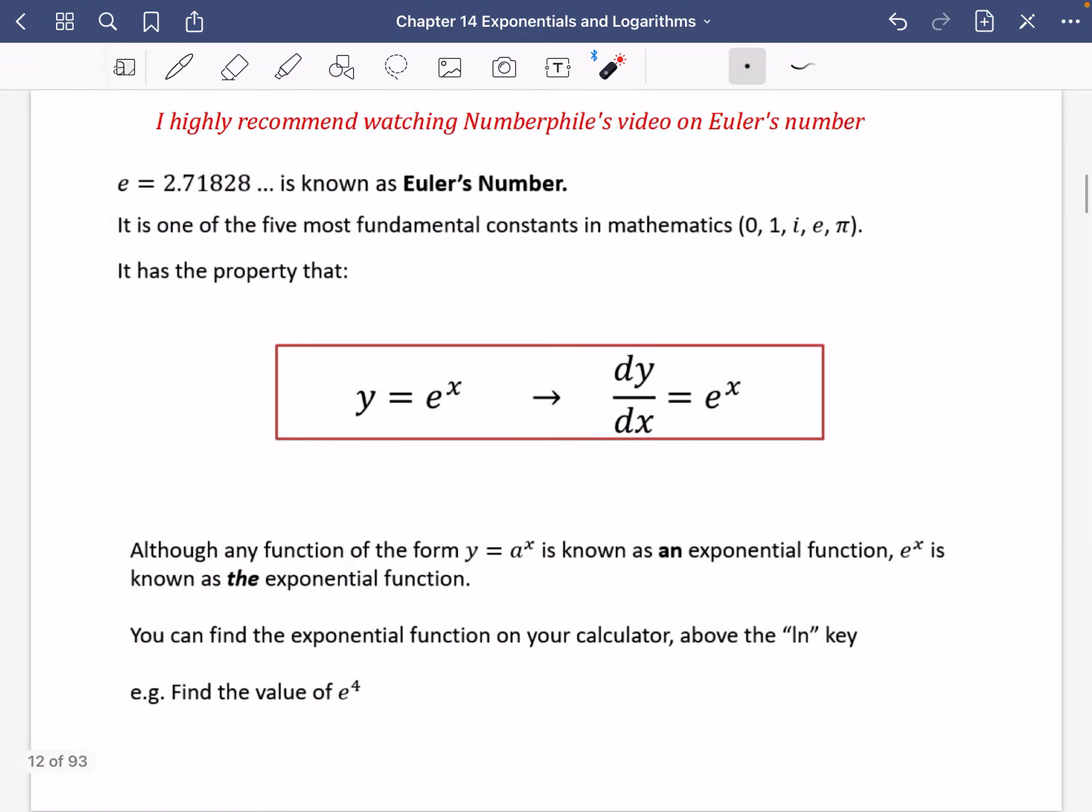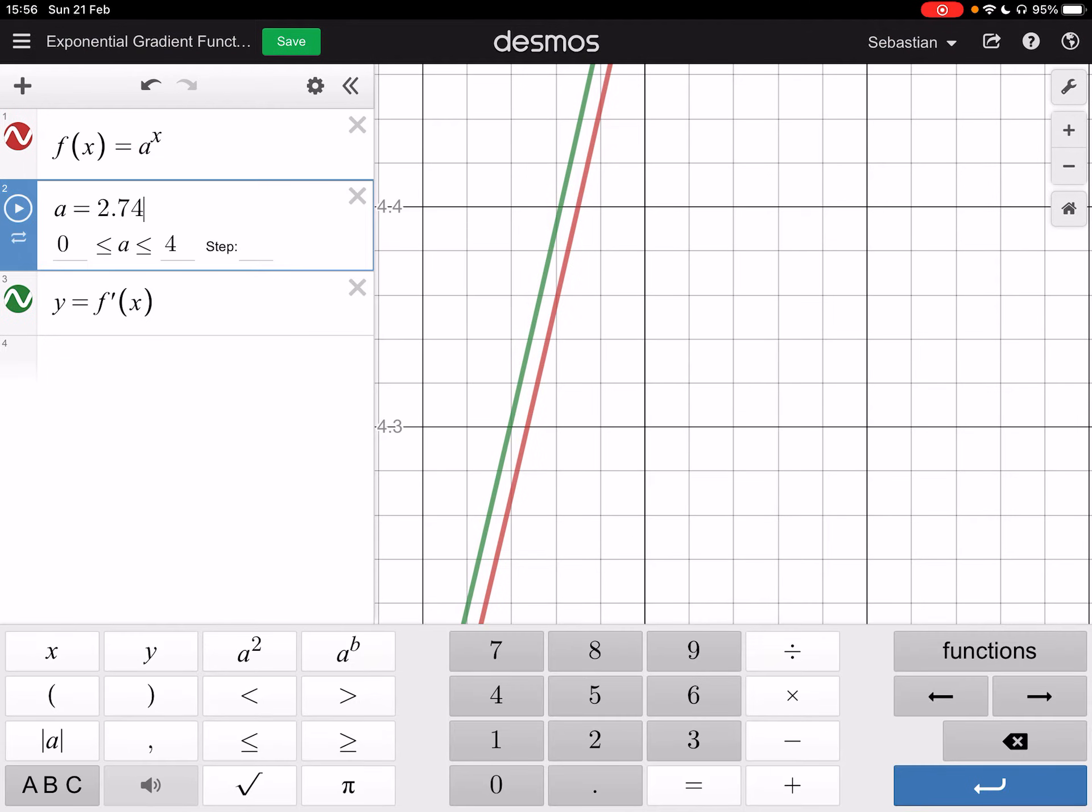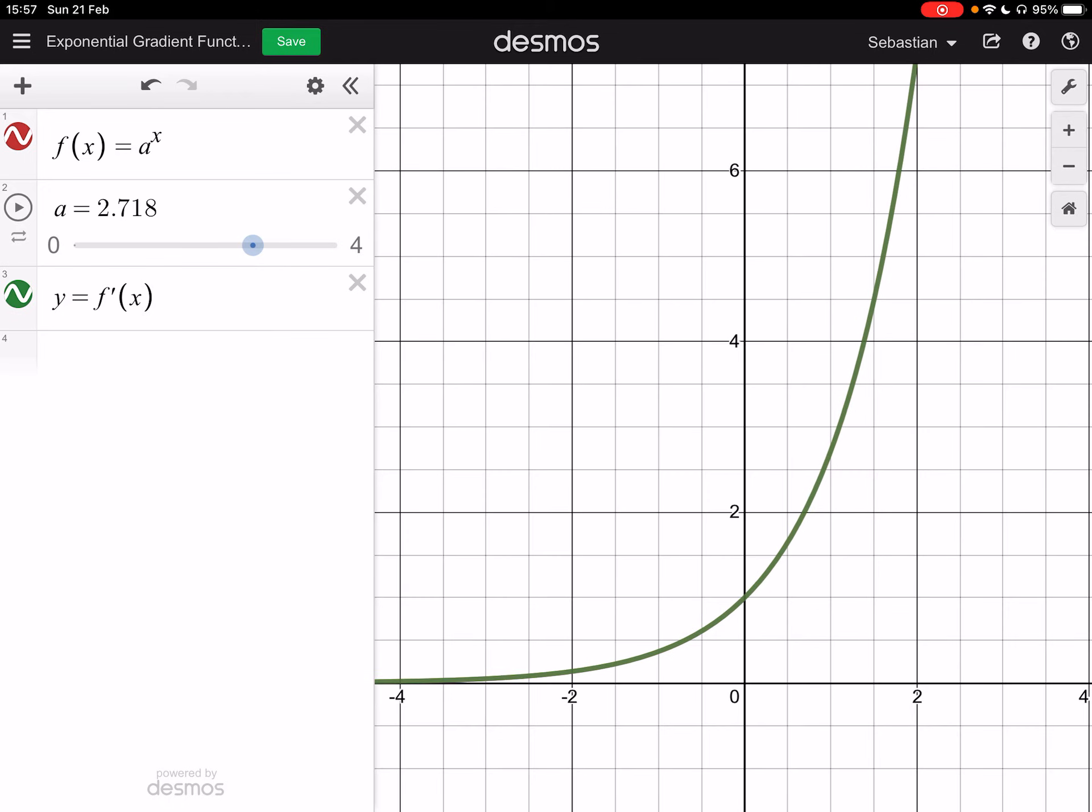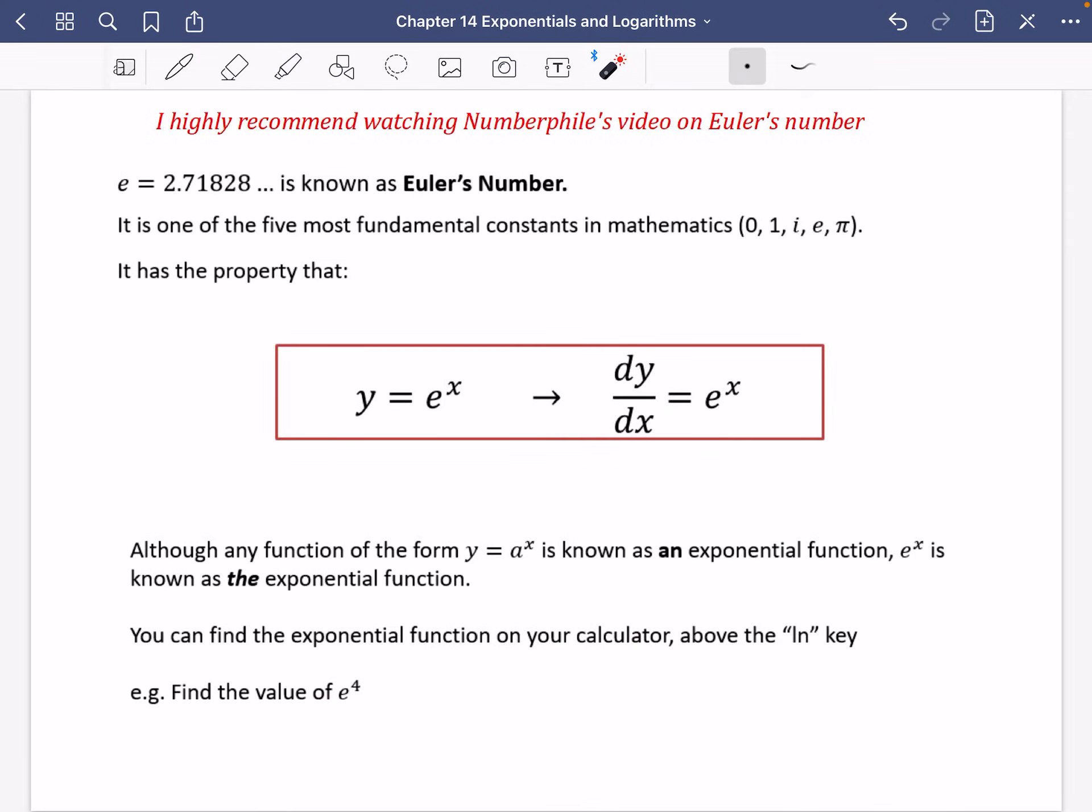Well, the number where the gradient function is exactly the same as the original function is where x is equal to e, which is 2.71828. And it is known as Euler's number. So let's just quickly remind us what this looks like visually. When a is equal to, and I'm going to replace it with 2.718, just it's rounded to three decimal places there. The gradient function and the function are the same. In other words, e^x differentiates to e^x, Euler's number. And when we're using e, we're just using it as a stand-in for the number 2.71828.